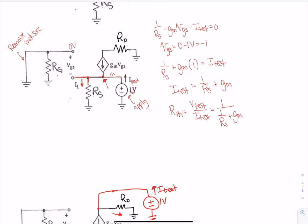I can rewrite this gm as one over a one over gm, that's the same value, and I notice this form is a parallel form, so it's rs in parallel with one over gm.